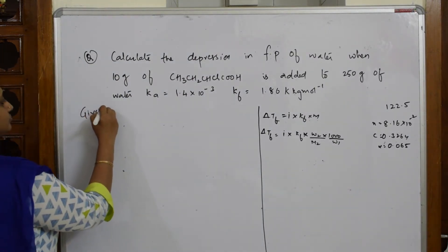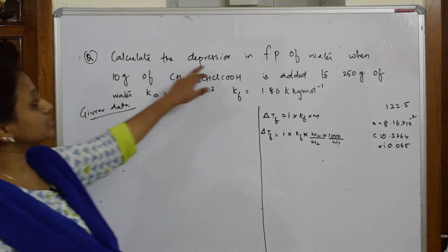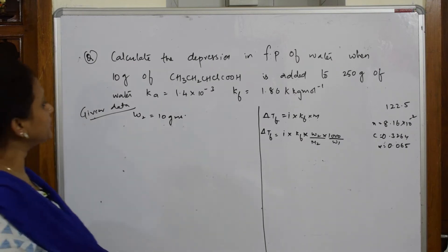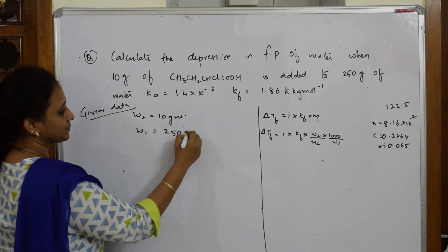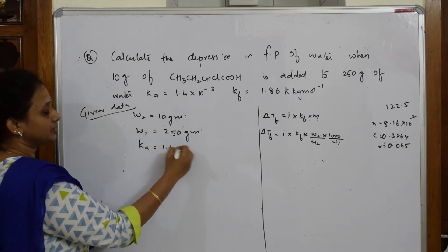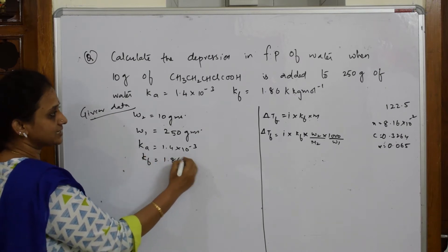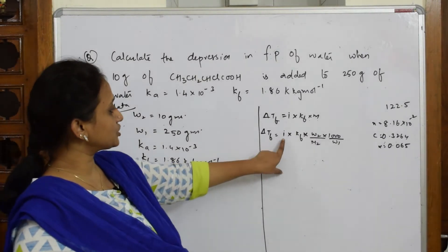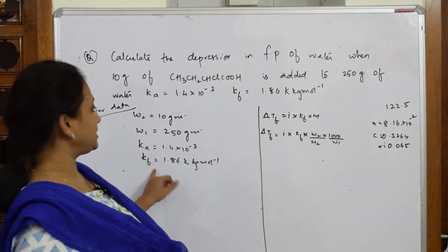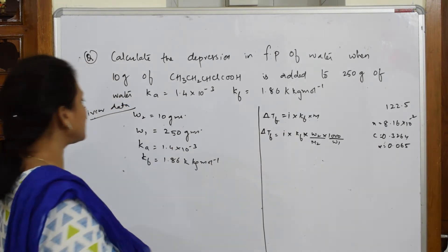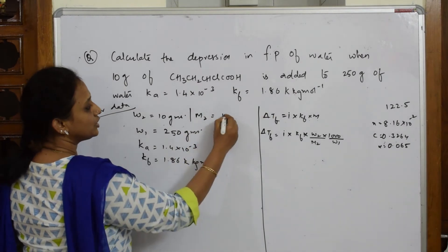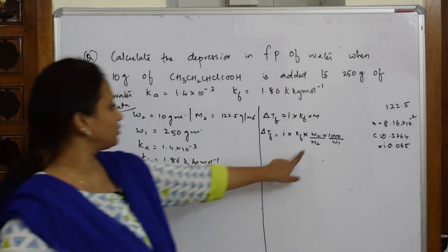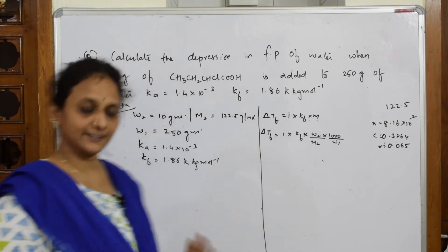Given data: calculate the depression in freezing point of water when 10 grams of chloroacetic acid (solute) is added to 250 grams of water. Ka = 1.4 × 10⁻³, Kf = 1.86 K·kg·mol⁻¹, and the molar mass of the acid M2 = 122.5 g/mol. So w2, w1, Ka, Kf, and M2 are all known; only i remains to be found.